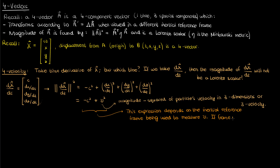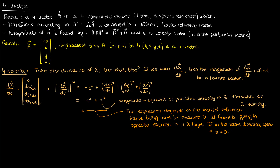The problem with this magnitude squared expression is that the three velocity depends on the inertial reference frame. If I'm going in the opposite direction as the particle, I get a large v squared term. If I'm moving at the same speed and direction as the particle, my v squared becomes zero. This means the derivative of the displacement four vector with respect to t does not have a Lorentz scalar magnitude, so the regular time derivative of a displacement four vector is not a four vector.